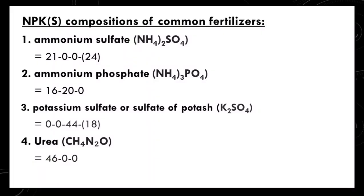Typically, fertilizers have nitrogen, phosphorus, potassium or NPK, and sometimes sulfur as their main components. Ammonium sulfate has a composition of 21-0-0, or 21% nitrogen, no phosphorus and potassium, and also 24% sulfur. Ammonium phosphate is 16-20-0, or 16% nitrogen, 20% phosphorus, and no potassium. Potassium sulfate has a composition of 0-0-44, or no nitrogen and phosphorus, with 44% potassium and 18% sulfur. Urea has 46-0-0, or 46% nitrogen and no phosphorus and potassium.